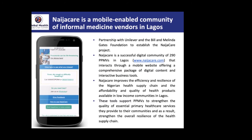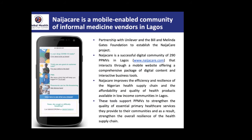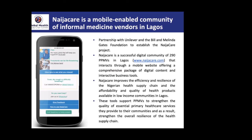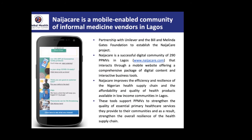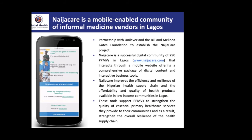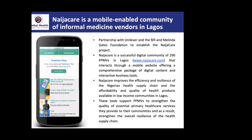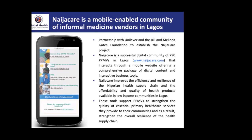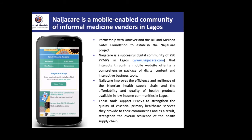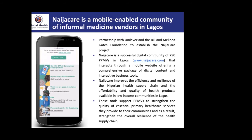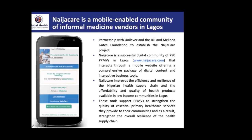PPMVs often encounter barriers to providing quality health products and services. They have limited access to business management skills, business networks, and support services. They often unknowingly sell counterfeit and unregulated medicines, which can jeopardize consumer safety. During the COVID-19 pandemic, many of these issues have been exacerbated, with national lockdowns restricting in-person transactions and creating shortages of basic hygiene products such as soaps, disinfectants, and hand sanitizers. NigerCare is an interactive mobile website offering a comprehensive package of digital content and interactive business tools, aiming to improve the efficiency and resilience of the Nigerian health supply chain through making affordable, quality health products available in low income communities.